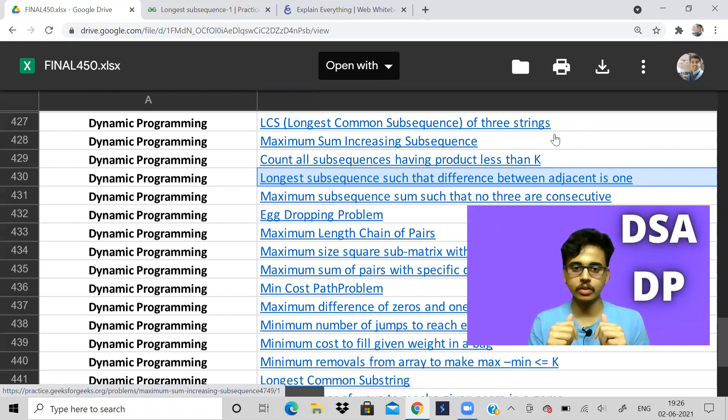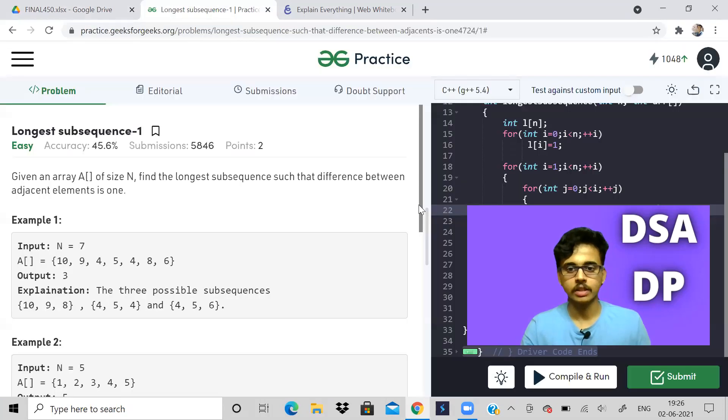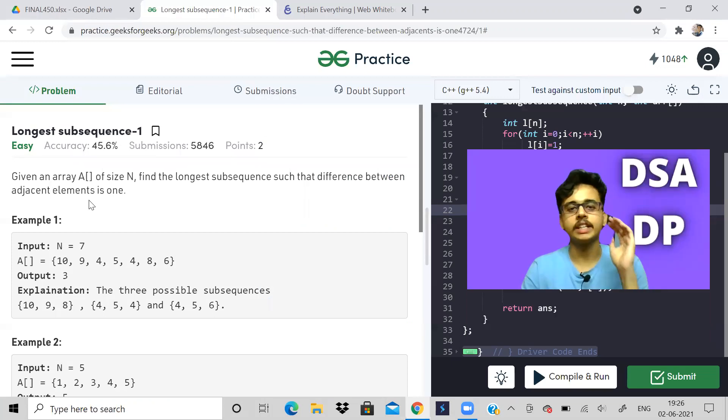And if you have watched those two, this video that I will be doing now will be very helpful and you will understand. So let us see the problem. We are given an array of integers. We have to find longest subsequence such that the difference between the adjacent elements is equal to one.